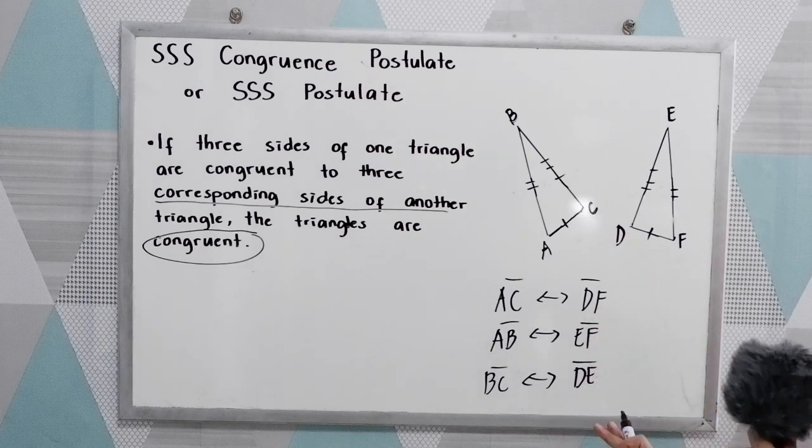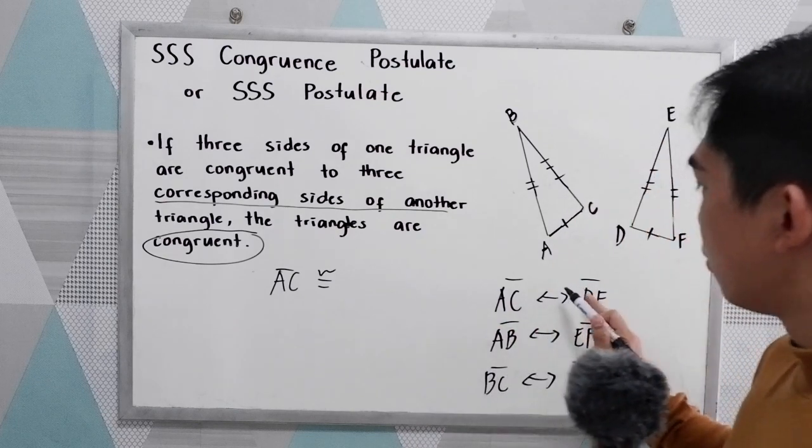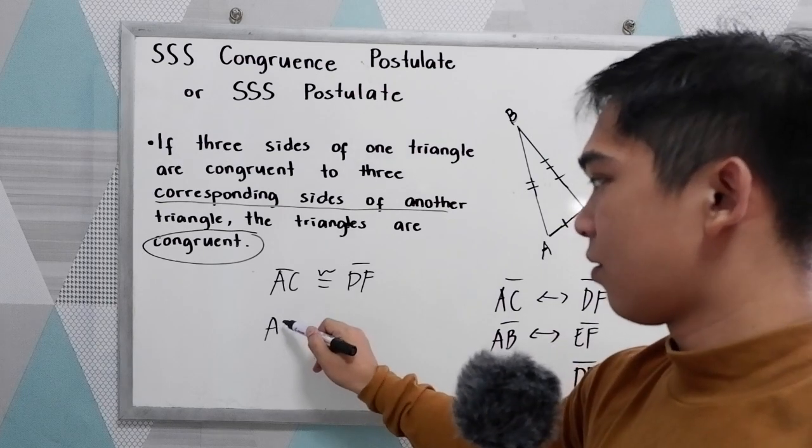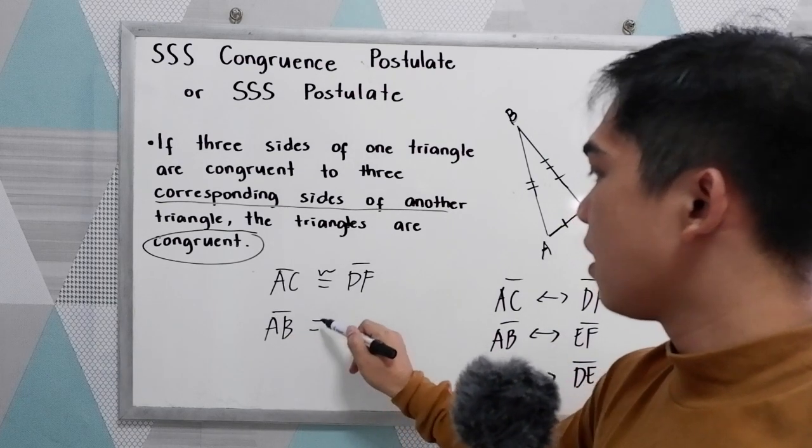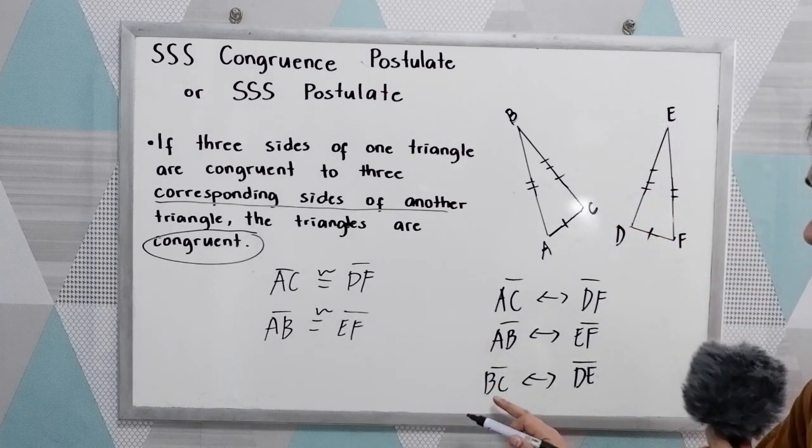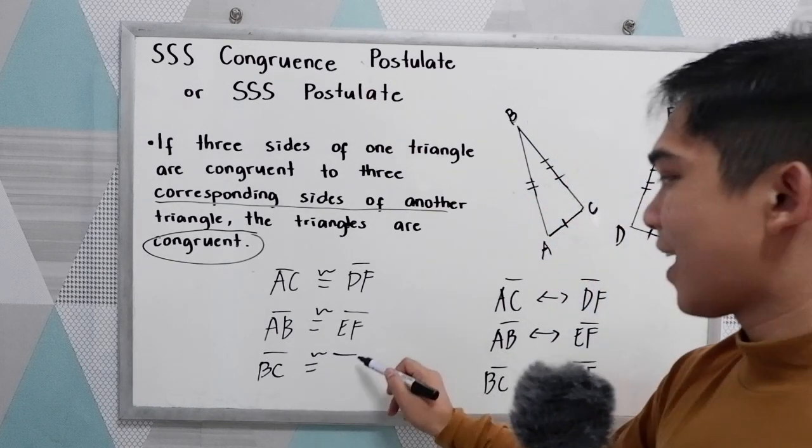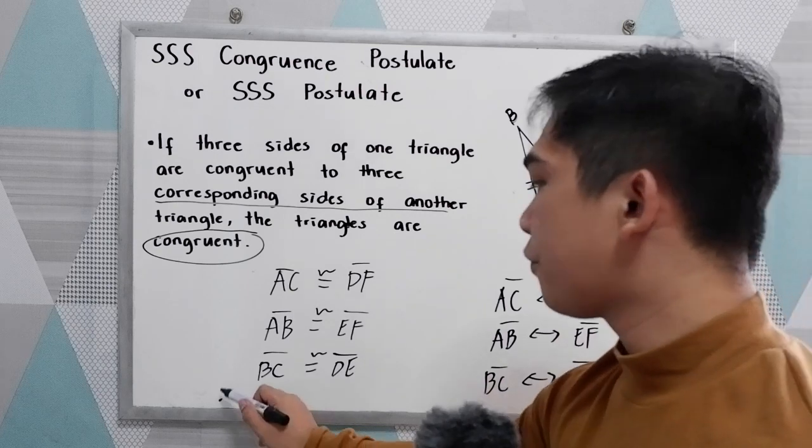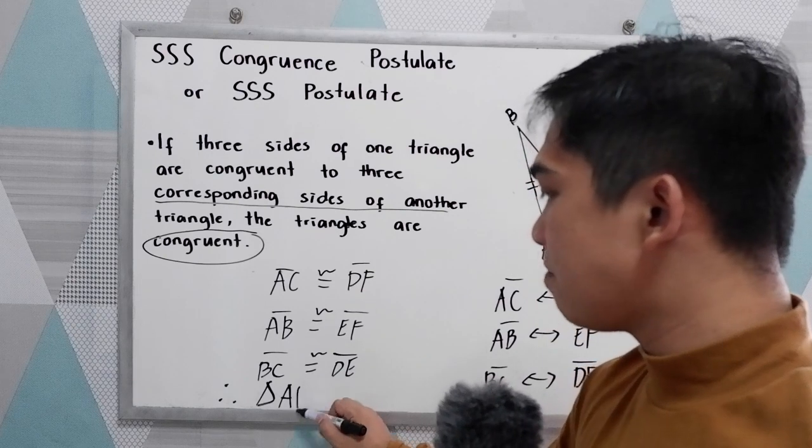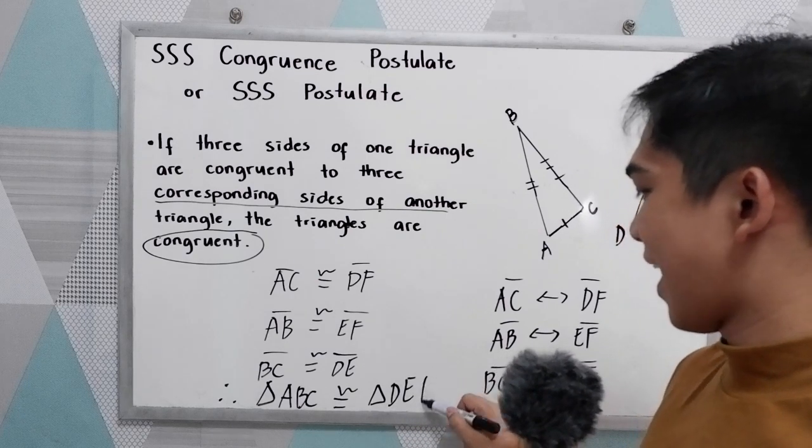Now if this is the case, we can say that AC is congruent to DF, and segment AB is congruent to segment EF, and segment BC is congruent to segment DE. Therefore, if that is the case, we can say that triangle ABC is congruent to triangle DEF.